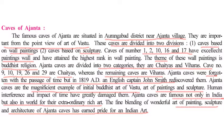In caves numbered 1 to 10, 16, and 17, there are excellent wall paintings, and these are the main attraction of the Caves of Ajanta. The caves are again divided into two categories: chaityas and viharas. Chaityas means temples and viharas means the places where monks live. Caves number 9, 10, 19, 26, and 29 are chaityas, and the remaining caves are viharas for living monks.